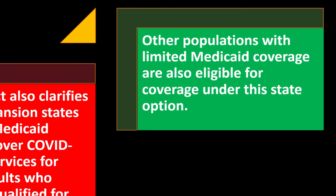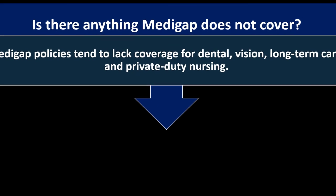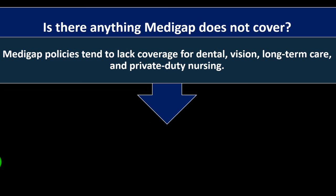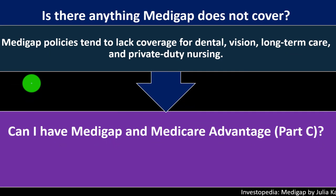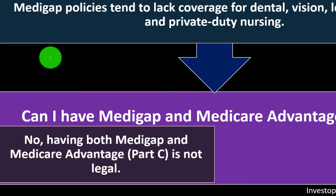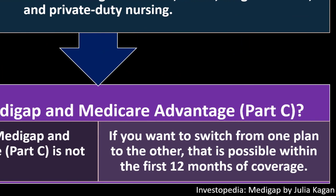Medigap policies tend to lack coverage for dental, vision, long-term care — which is the big one — and private duty nursing. That long-term care gap was discussed in prior presentations with Medicaid. Additionally, having both Medigap and Medicare Advantage Part C is not legal. If you want to switch from one plan to the other, that is possible within the first 12 months of coverage.